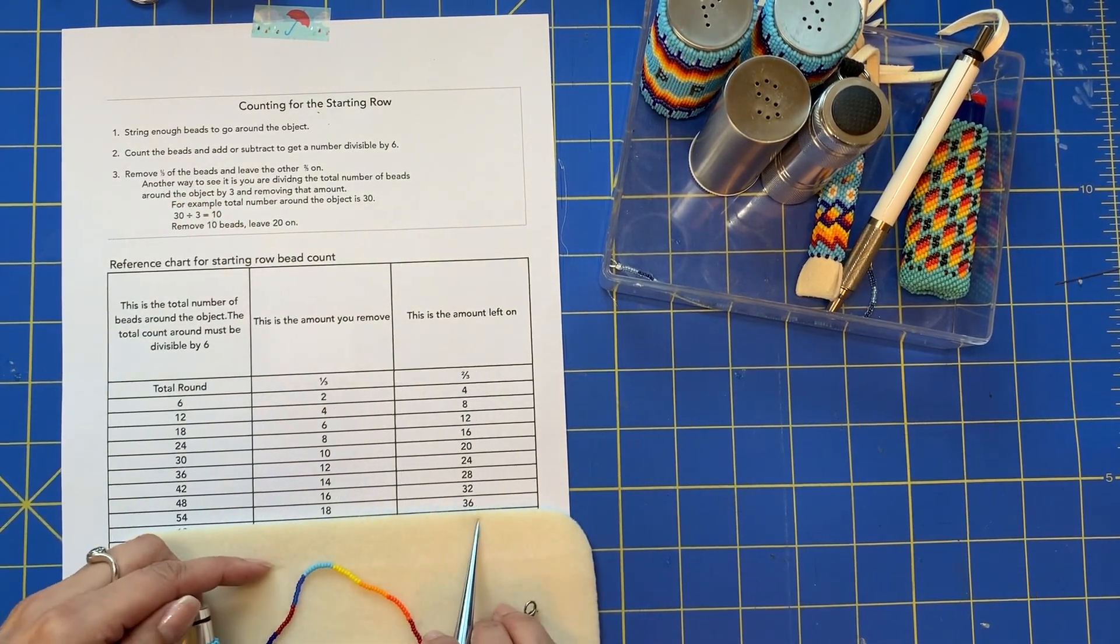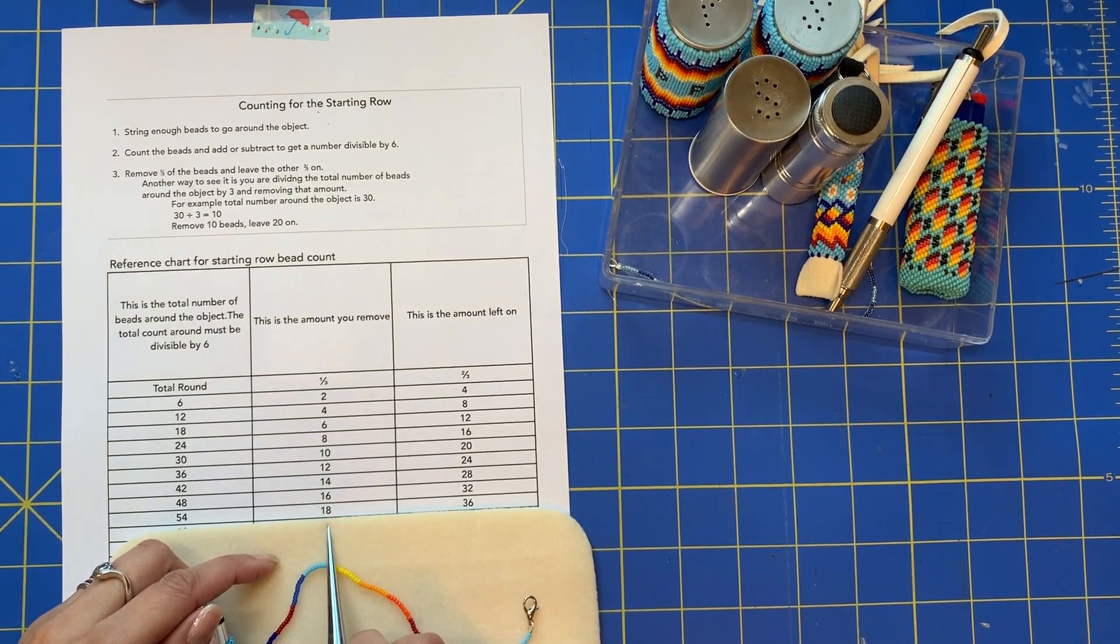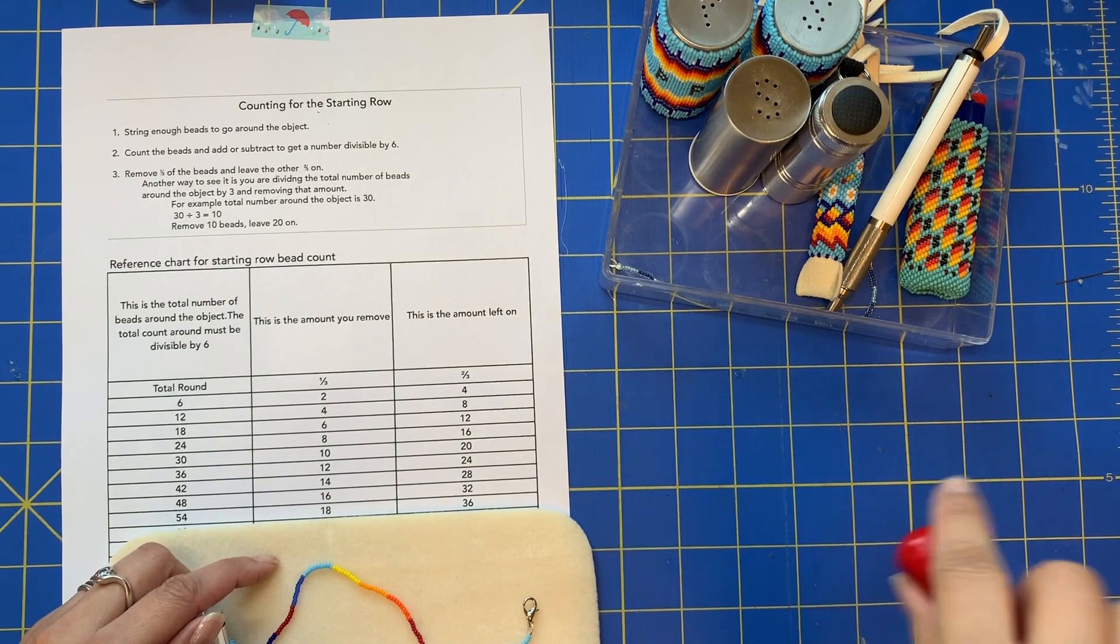I would leave on 36, take off 18, and that's the number you're using when you skip a bead.